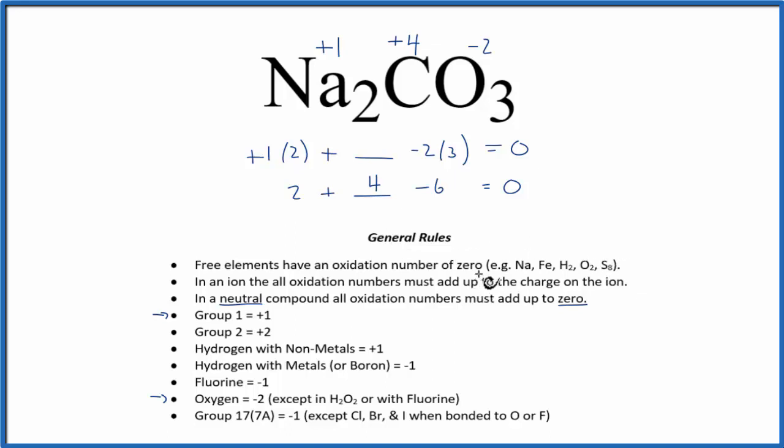So to recap, we found the oxidation numbers for the elements that we knew, and then we used the fact that a neutral compound, all the numbers, all the oxidation numbers add up to zero, to figure out the one we didn't know, the C in Na2CO3. This is Dr. B with the oxidation numbers for sodium carbonate, and thanks for watching.